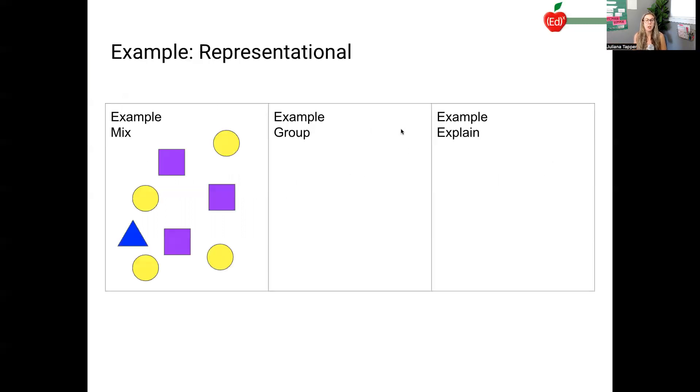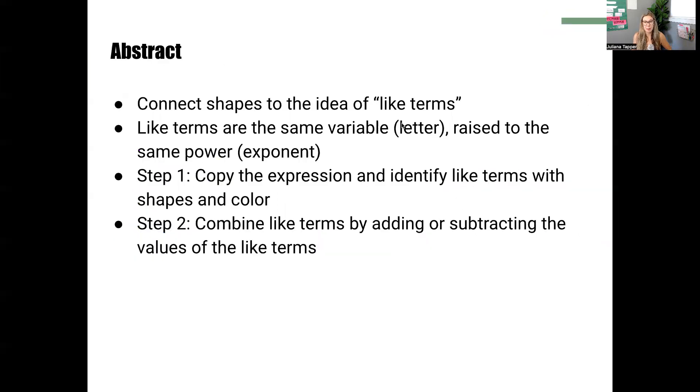So it'll look like this. Here was our random grouping. Now I'm going to put all the circles together, all the squares together, and the triangle together. And then I'm going to explain it. I have four circles, three squares, and one triangle. And then you do that for the whole row on the first page of our note sheet that you can grab when you put in your information down below.